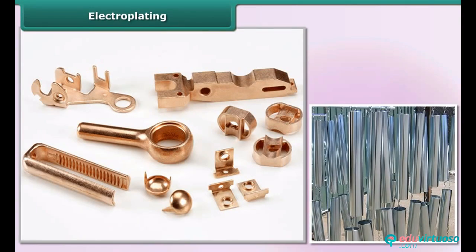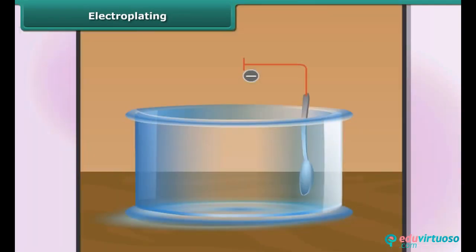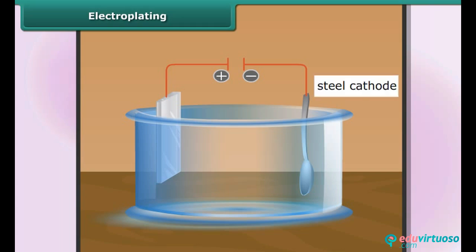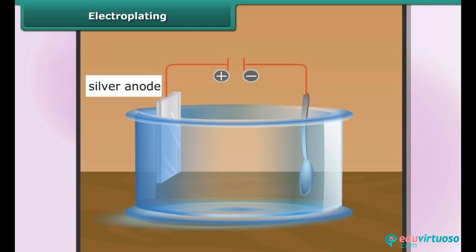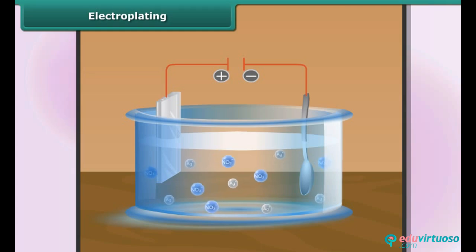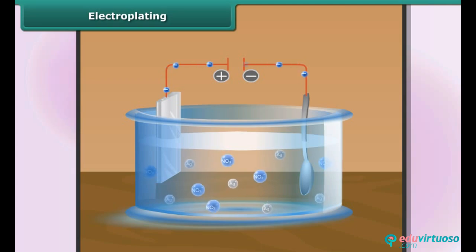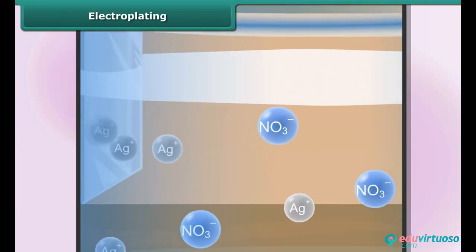It is common practice to coat articles made of cheap metals such as iron or steel with a thin layer of a less reactive metal. A steel object — for example, a spoon — is connected to the negative terminal of the current source. The positive terminal is connected to the bar of the metal, for example pure silver. Thus the spoon acts as the cathode in the electrolysis, while the bar of the metal acts as the anode. The electrolyte is a solution of salt that contains the ion of the anode metal, for example silver nitrate. As soon as electric current starts flowing through the solution, electrons begin to escape from the silver anode.